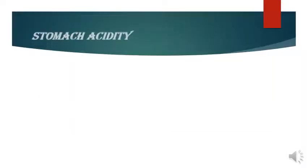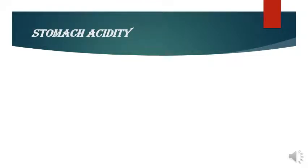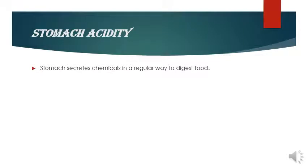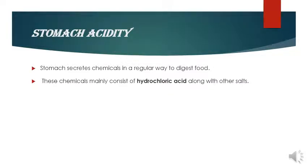Now we have a yellow box topic — a short question topic: stomach acidity. Our stomach uses chemicals in a regular way to digest food. Stomach acidity is produced by acid. These chemicals mainly consist of hydrochloric acid, and there are some salts that help in the digestion process.